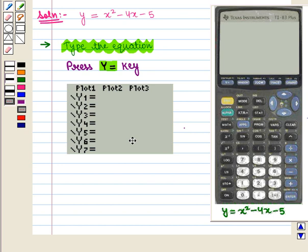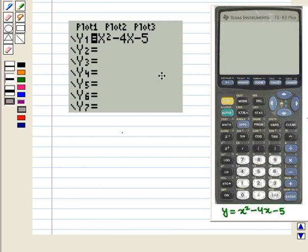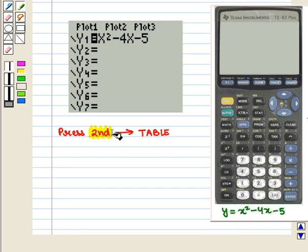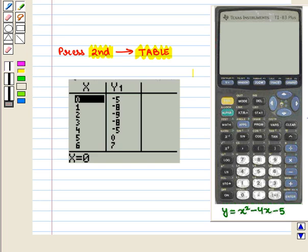Then the following screen will be displayed. Now we type x² - 4x - 5 into Y1 and we will get this display on the screen. Now let us see its table. Table is written above graph key. So we press 2nd key followed by table key. We get the following table on the screen.